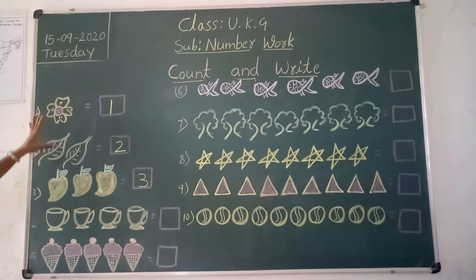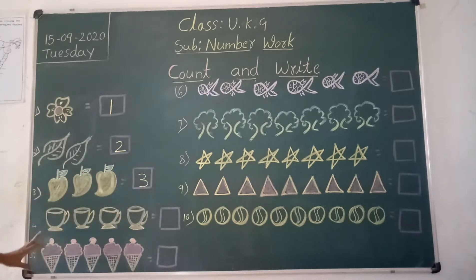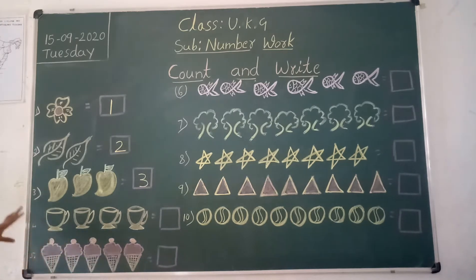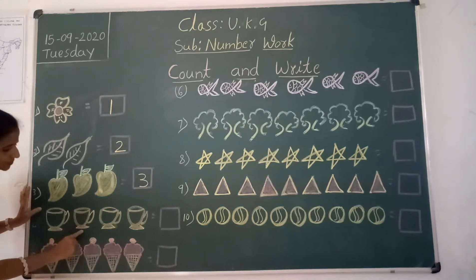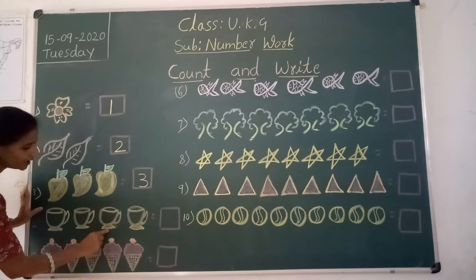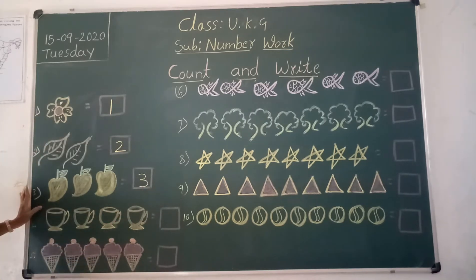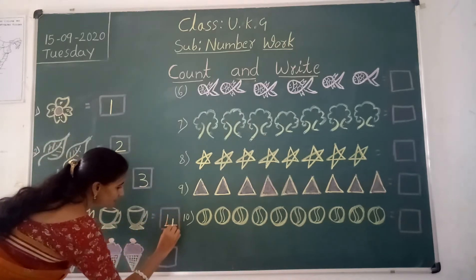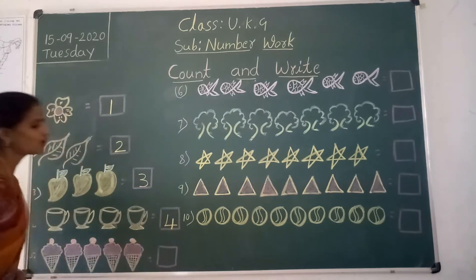See the object. Count the object and write in this box. What are these? Cups. We will count, children: one, two, three, four. How many? Four. We should write in this box — number four.